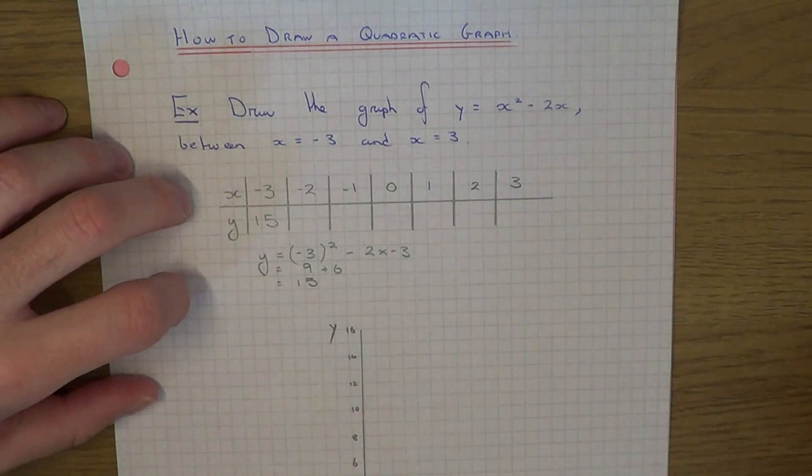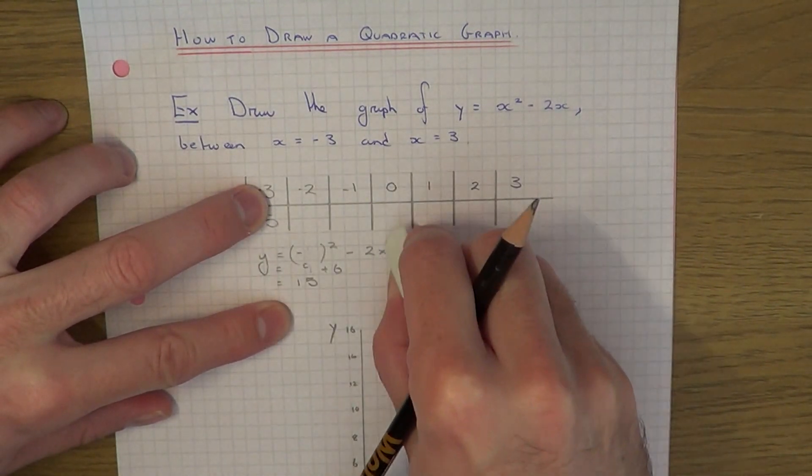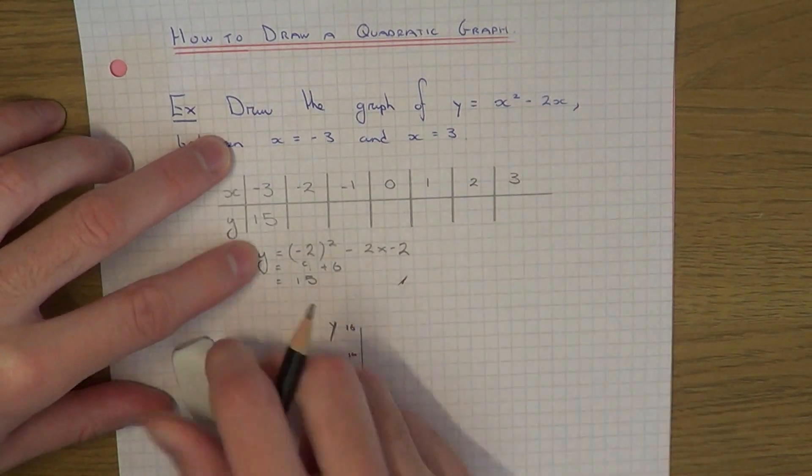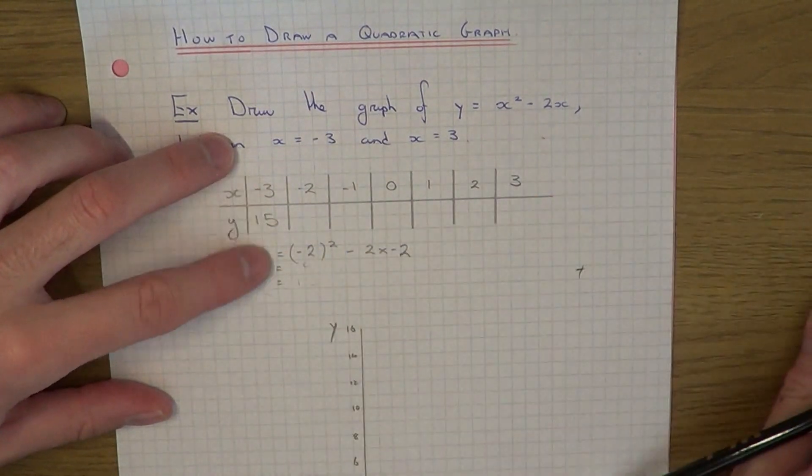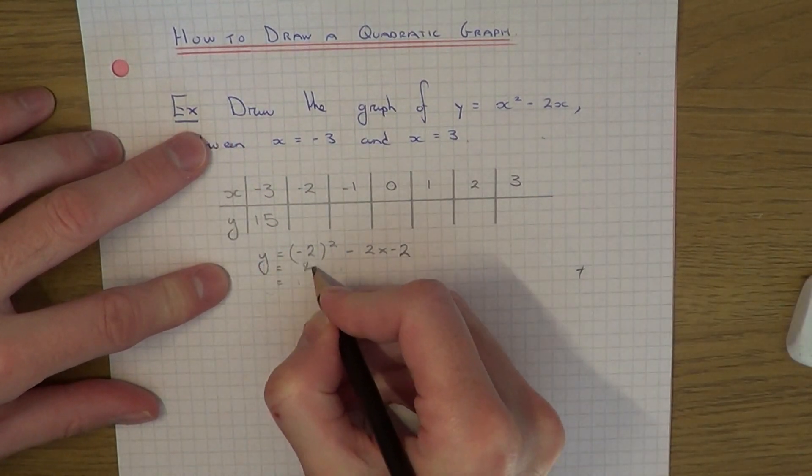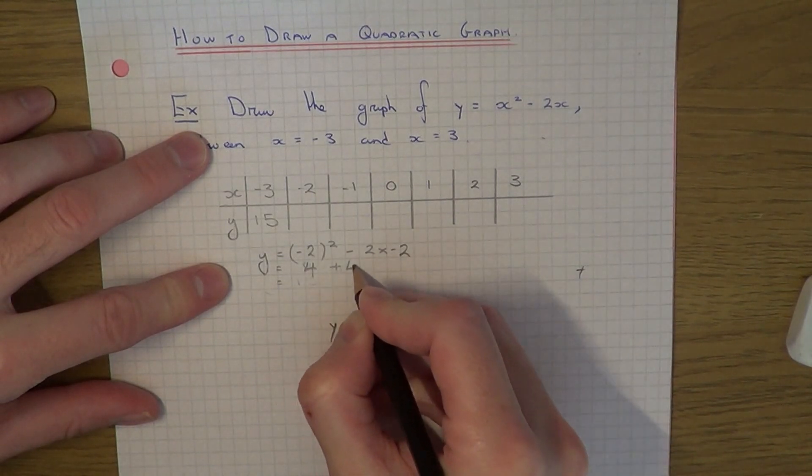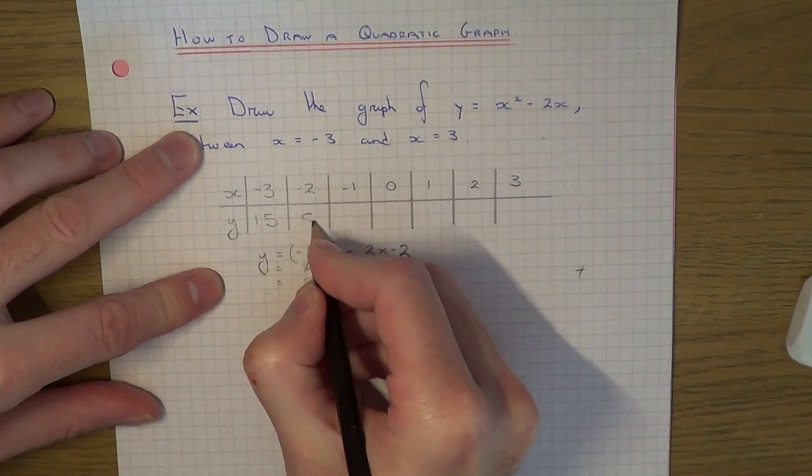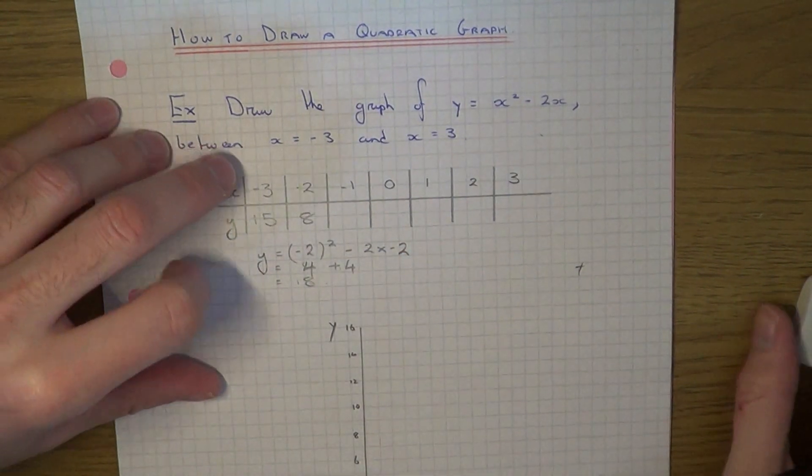The next one we've got to sub in is minus 2. Now we'll just change the x's to minus 2. Minus 2 squared is plus 4. Minus 2 times minus 2 is also plus 4. 4 add 4 is 8. So our next coordinate is minus 2 comma 8.